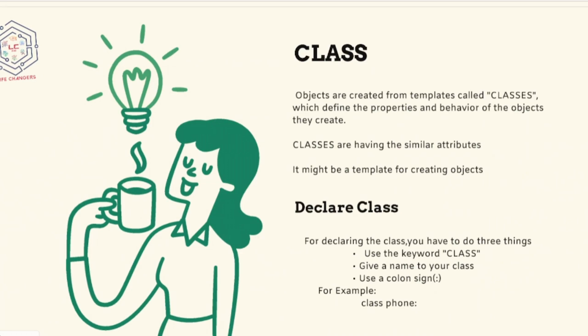Since a class is a category or a group of things that share similar attributes, while programming, you will create a class, the template. Then you will use the class to create individual objects with similar attributes. What is class? A template to create similar objects.